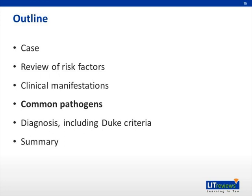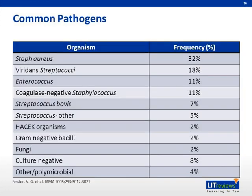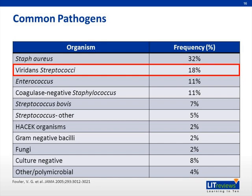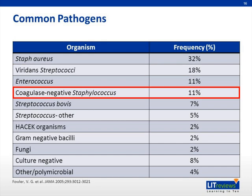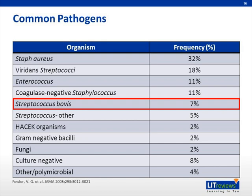Common pathogens. In one study, the International Collaboration on Endocarditis investigators enrolled 1,779 patients with definite IE during a 48-month study period. Of these patients, 558, or roughly 32%, were found to be infected with Staph aureus. Other common pathogens included viridans strep, enterococcus, and coagulase-negative staphylococcus. Streptococcus bovis is also important because it is associated with GI malignancy.